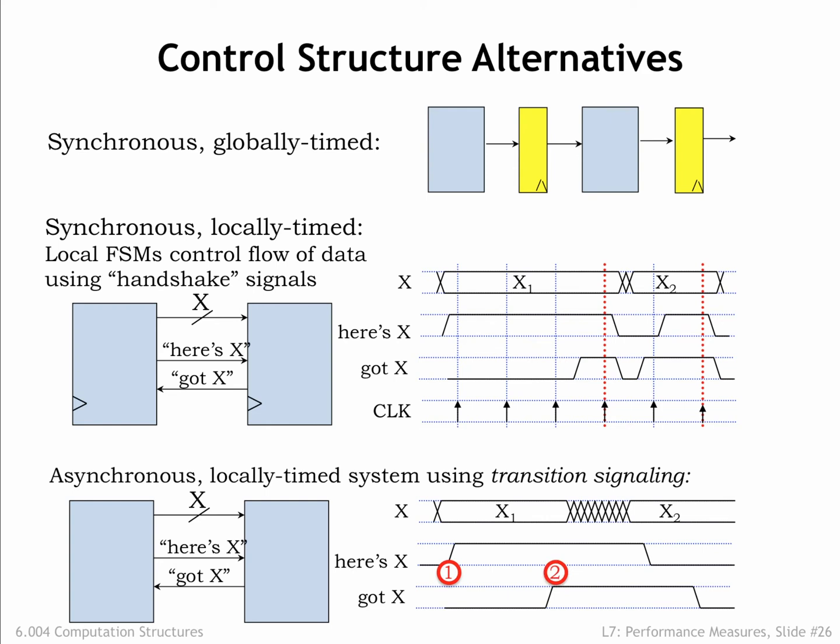In phase 2, the downstream stage, seeing that here's X is asserted, asserts got X when it has consumed the available input. In phase 3, the downstream stage waits to see here's X go low, indicating that the upstream stage has successfully received the got X signal. In phase 4, once here's X is deasserted, the downstream stage deasserts got X and the transfer handshake is ready to begin again.